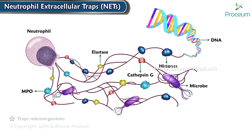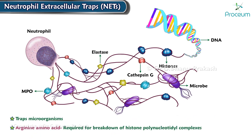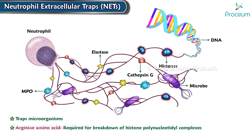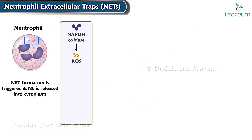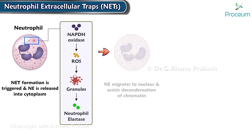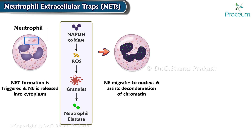NETs have been shown to trap microorganisms. Arginine amino acids are required for the breakdown of histone-polynucleotidal complexes, which is necessary for NETs. By the action of reactive oxygen species production, the neutrophils become rounded with uniformly condensed chromatin. This occurs because of the PAD4-mediated citrullination of histones.